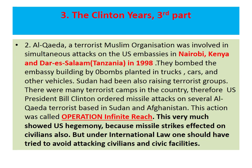Second, Al-Qaeda terrorist organization was involved in simultaneous attacks on US embassies in Nairobi, Kenya, and Dar es Salaam, Tanzania, in 1998. They bombed the embassy buildings using bombs planted in trucks, cars, and other vehicles. Sudan had also been raising terrorist groups with many terrorist camps in the country. President Bill Clinton ordered missile attacks on several Al-Qaeda terrorist bases in Sudan and Afghanistan. This action was called Operation Infinite Reach. This showed US hegemony, though missile strikes affected civilians, which violated international law.